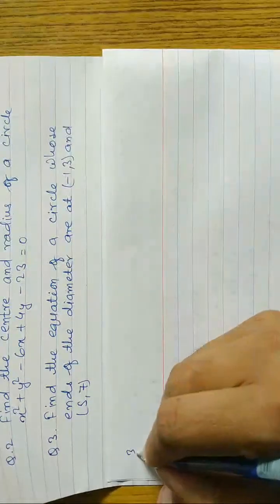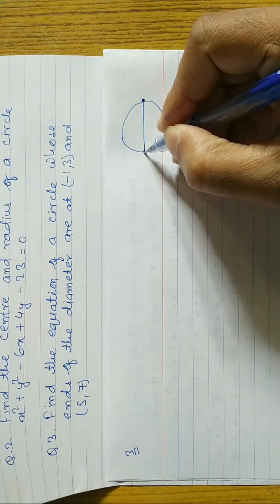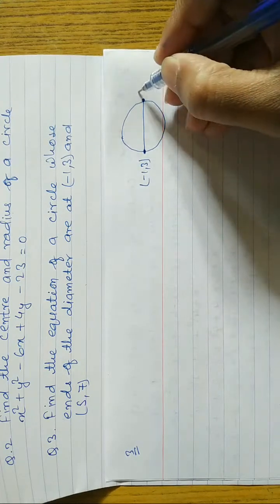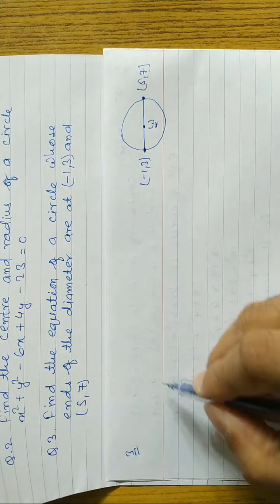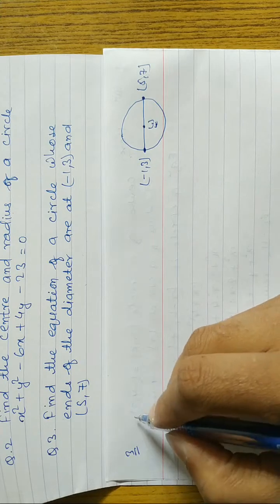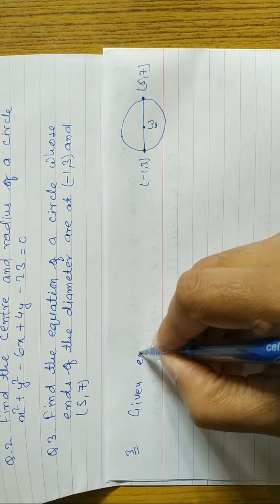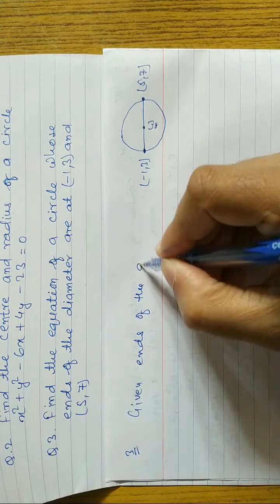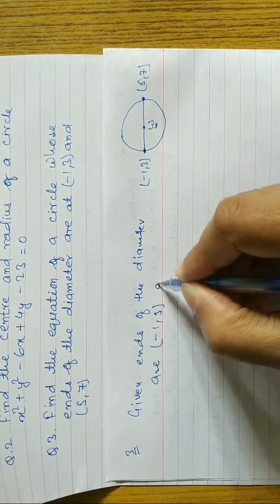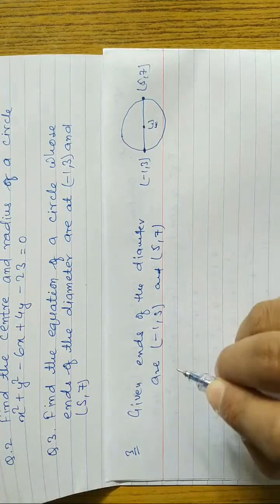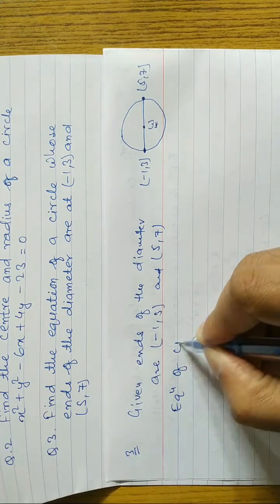Question number 3 has a circle with the ends of the diameter given. The ends are: point A(-1, 3) and point B(5, 7). A diagram is not necessary to understand — just know that the diameter always passes through the center. So here, given ends of the diameter are (-1, 3) and (5, 7). We have to find out the equation of the circle.